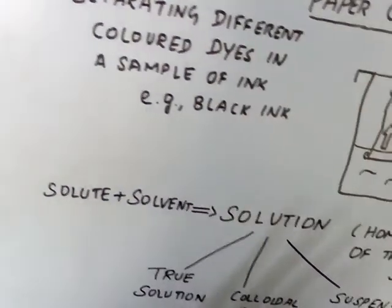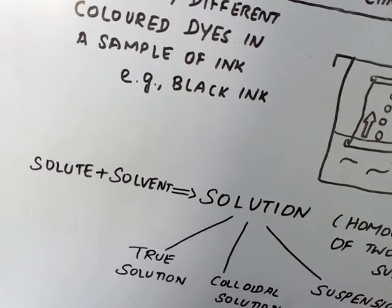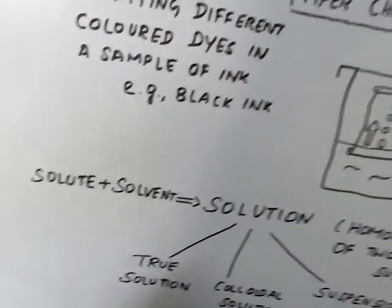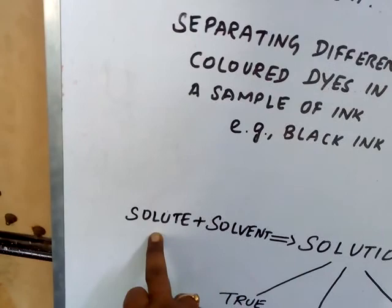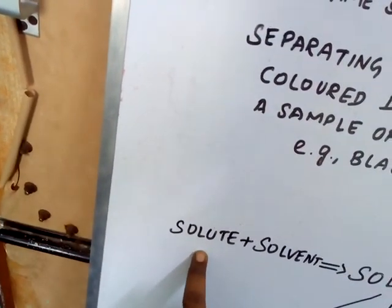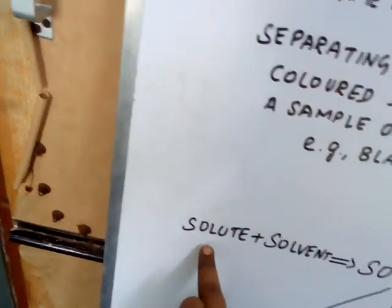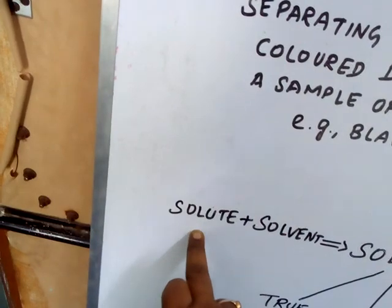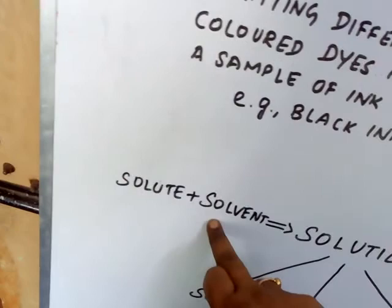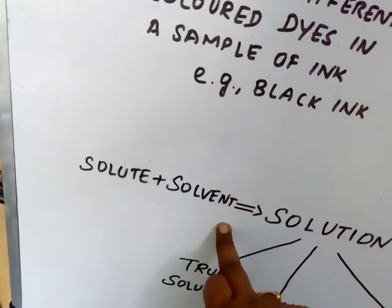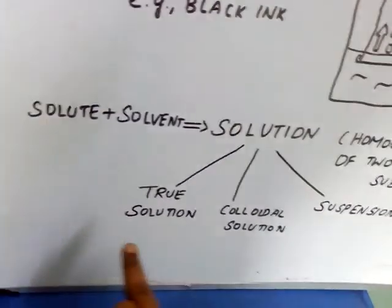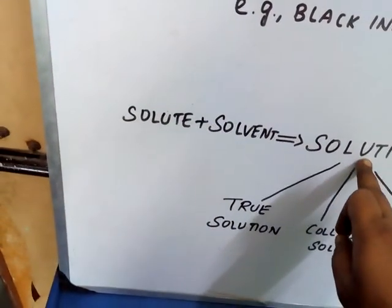Suppose when we are preparing salt solution, what are the components needed? Salt, water. So that we will get solution. That salt is taken as solute. The solute in the sense less amount. The solution which contains less amount of solute, always solute will be in lesser amount and solvent will be high. After that, now we are going to discuss in detail about the types of solution.